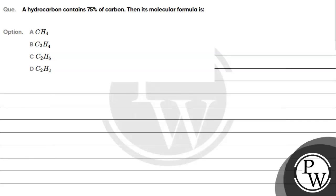Hello guys, let's read this question. The question says, a hydrocarbon contains 75% of carbon, then its molecular formula is